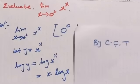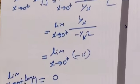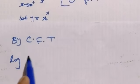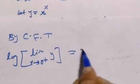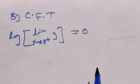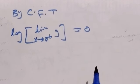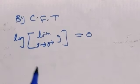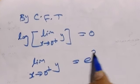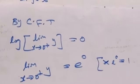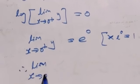So the final step is: log of limit as x approaches 0 plus y equals 0. Next, taking exponent on both sides: e power. Then e power log cancels, since exponential function is the inverse of logarithm function. So limit as x approaches 0 plus y equals e power 0. E power 0 is 1. Therefore, limit as x approaches 0 plus of x power x equals 1.